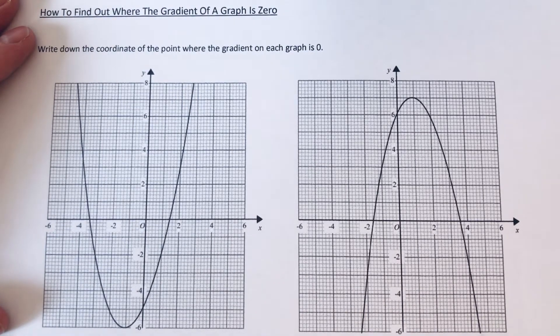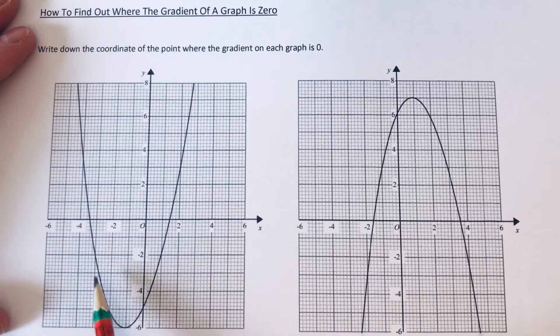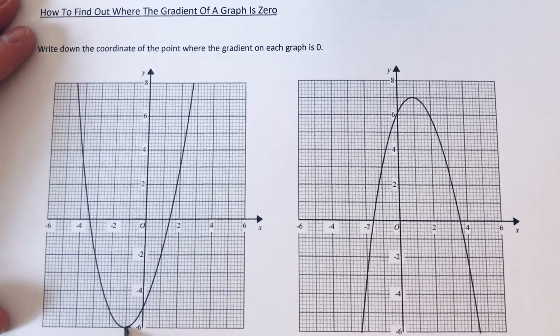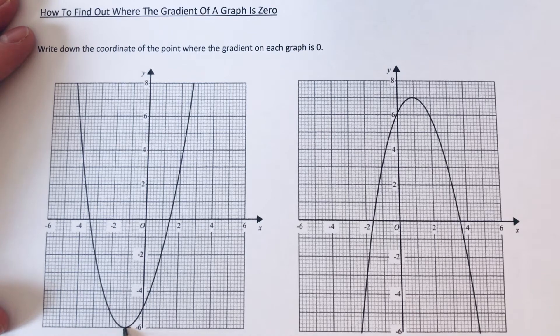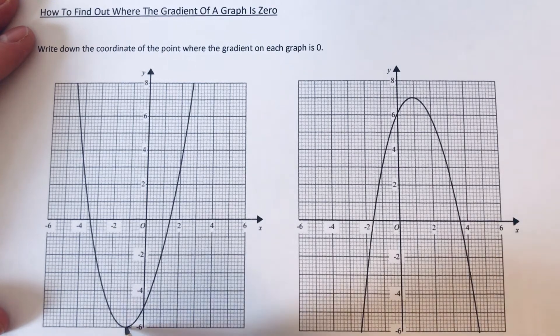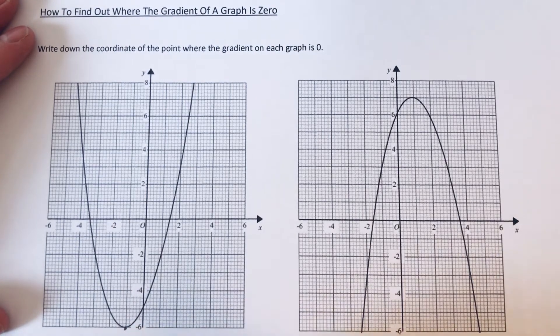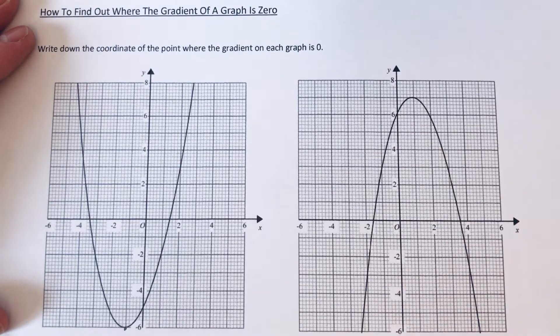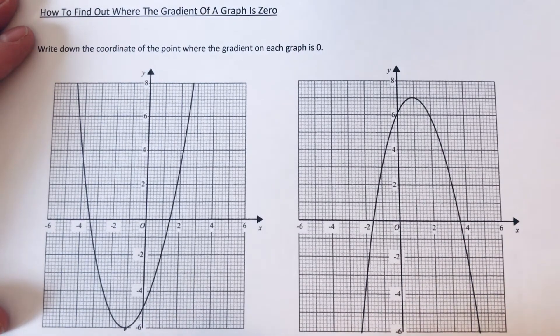So the point where the graph is flat is at the bottom of this graph here. So we're looking at this point here. Okay, so if we just write down the coordinate of this point.